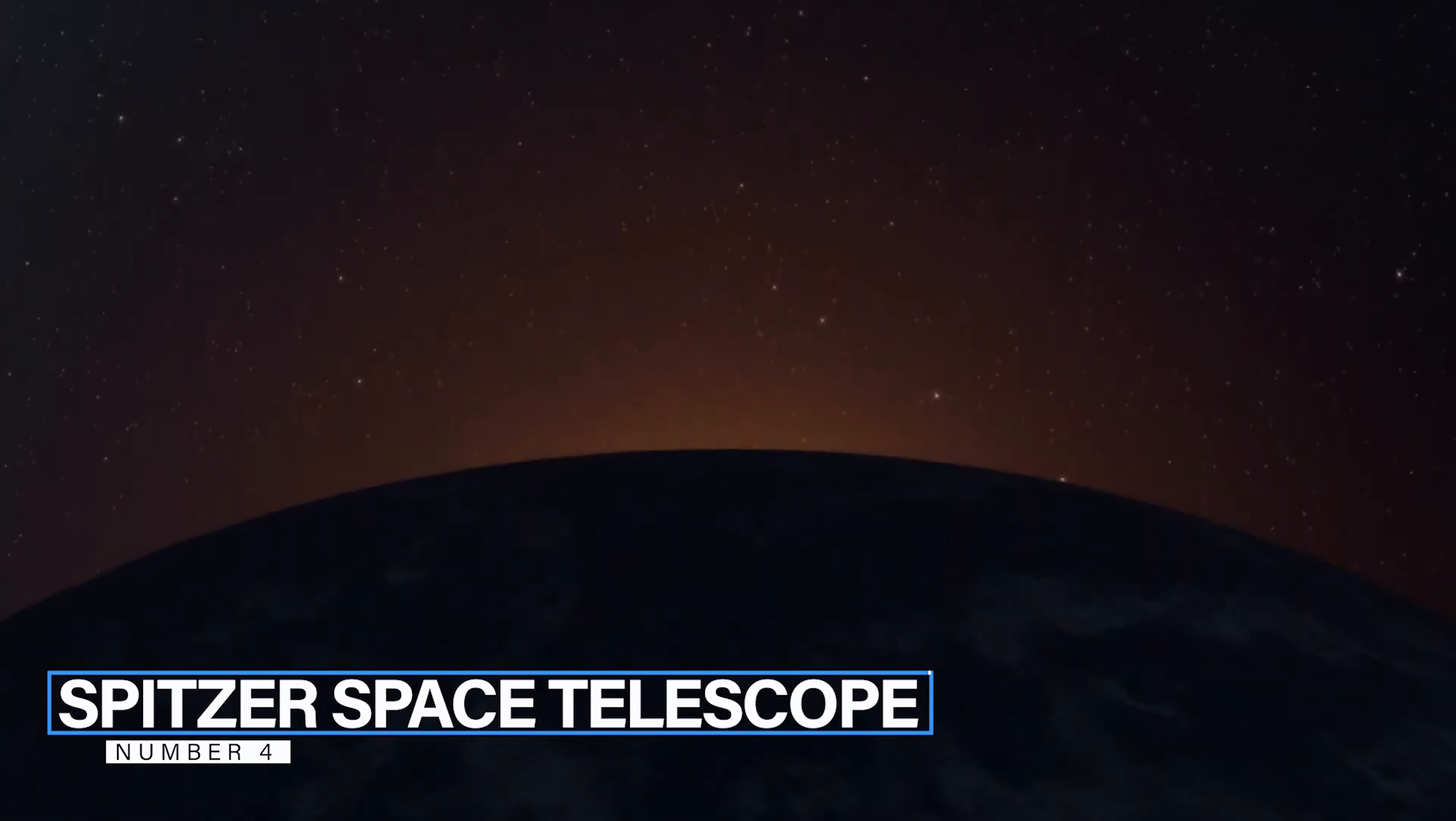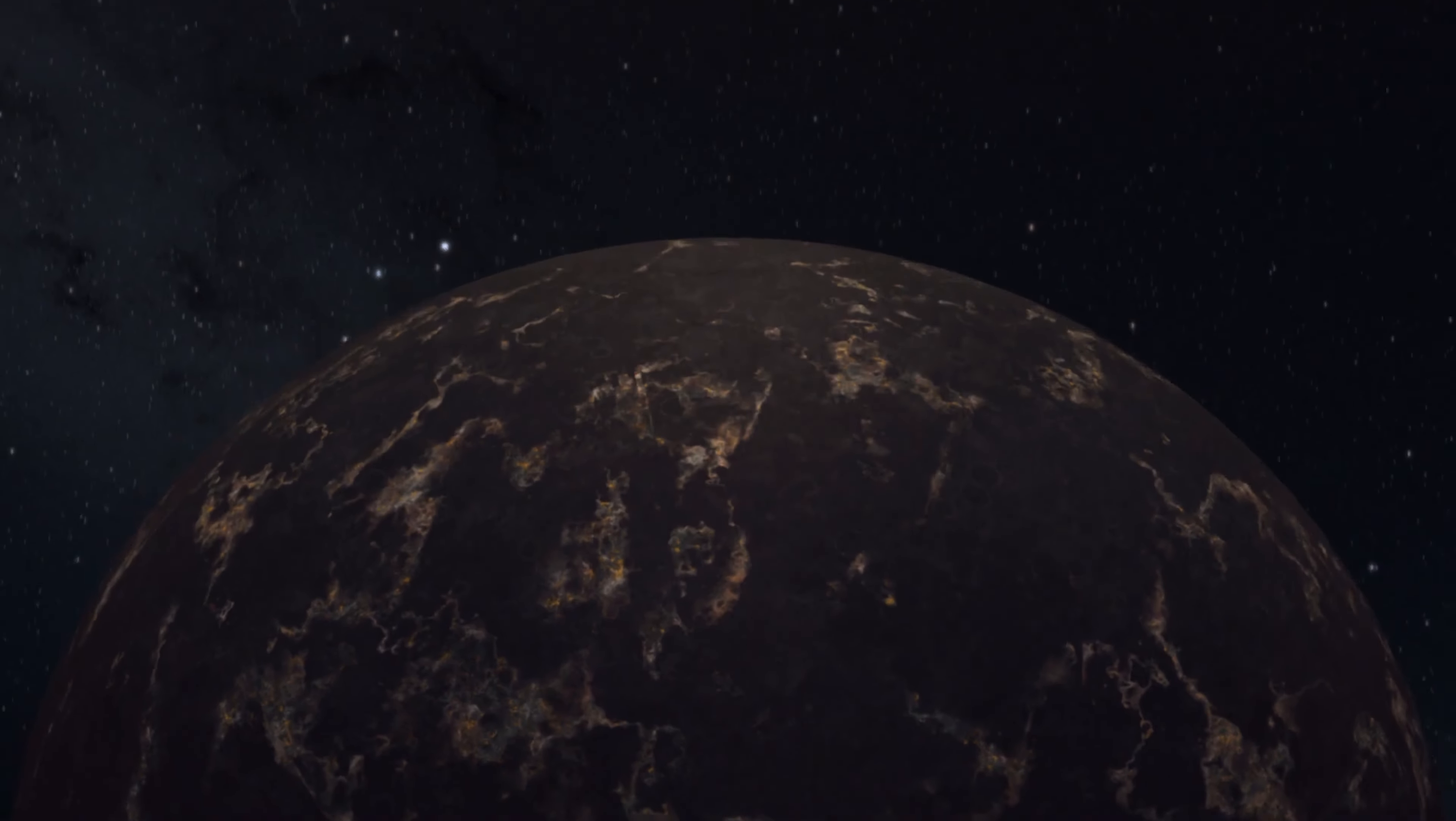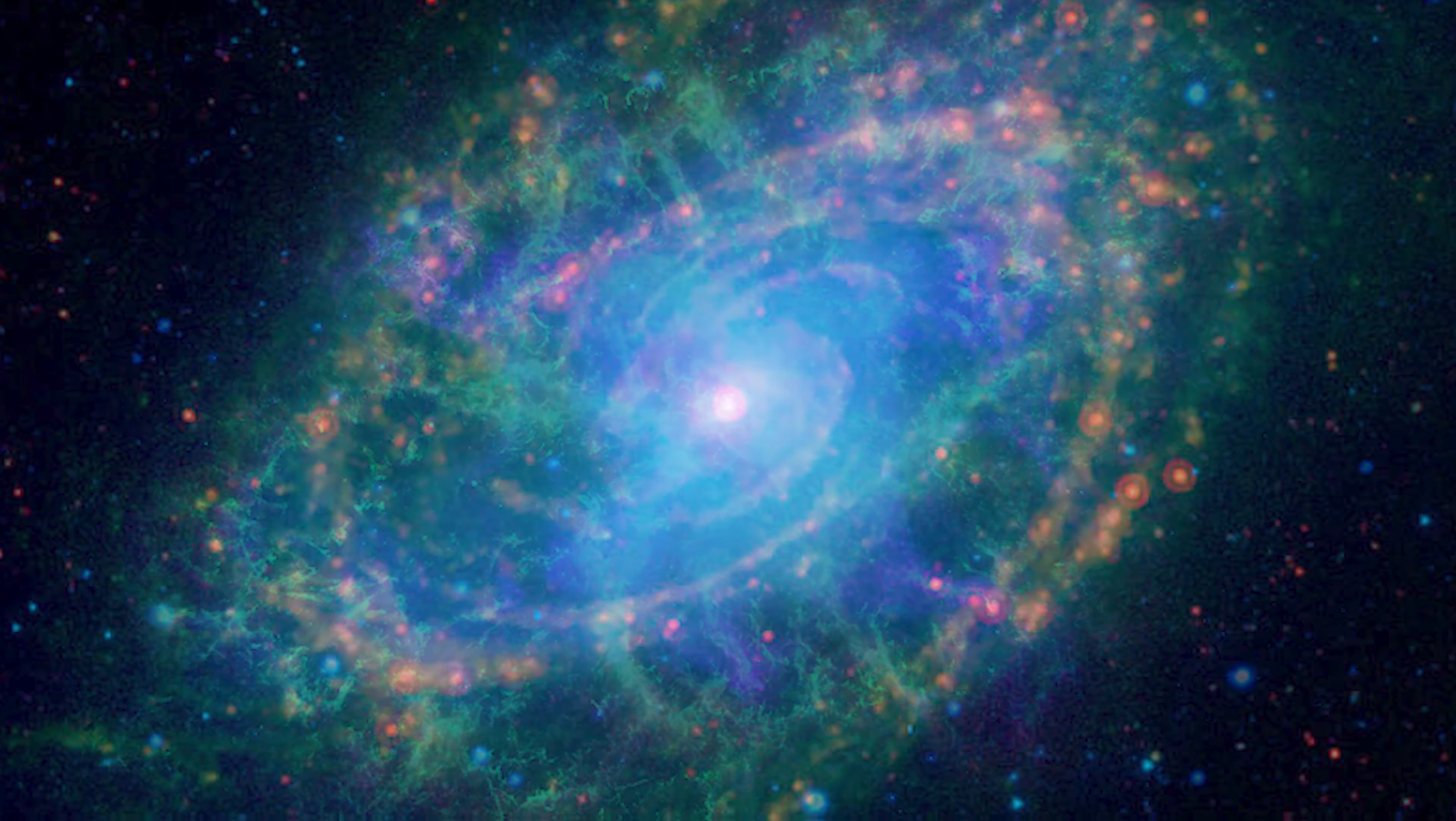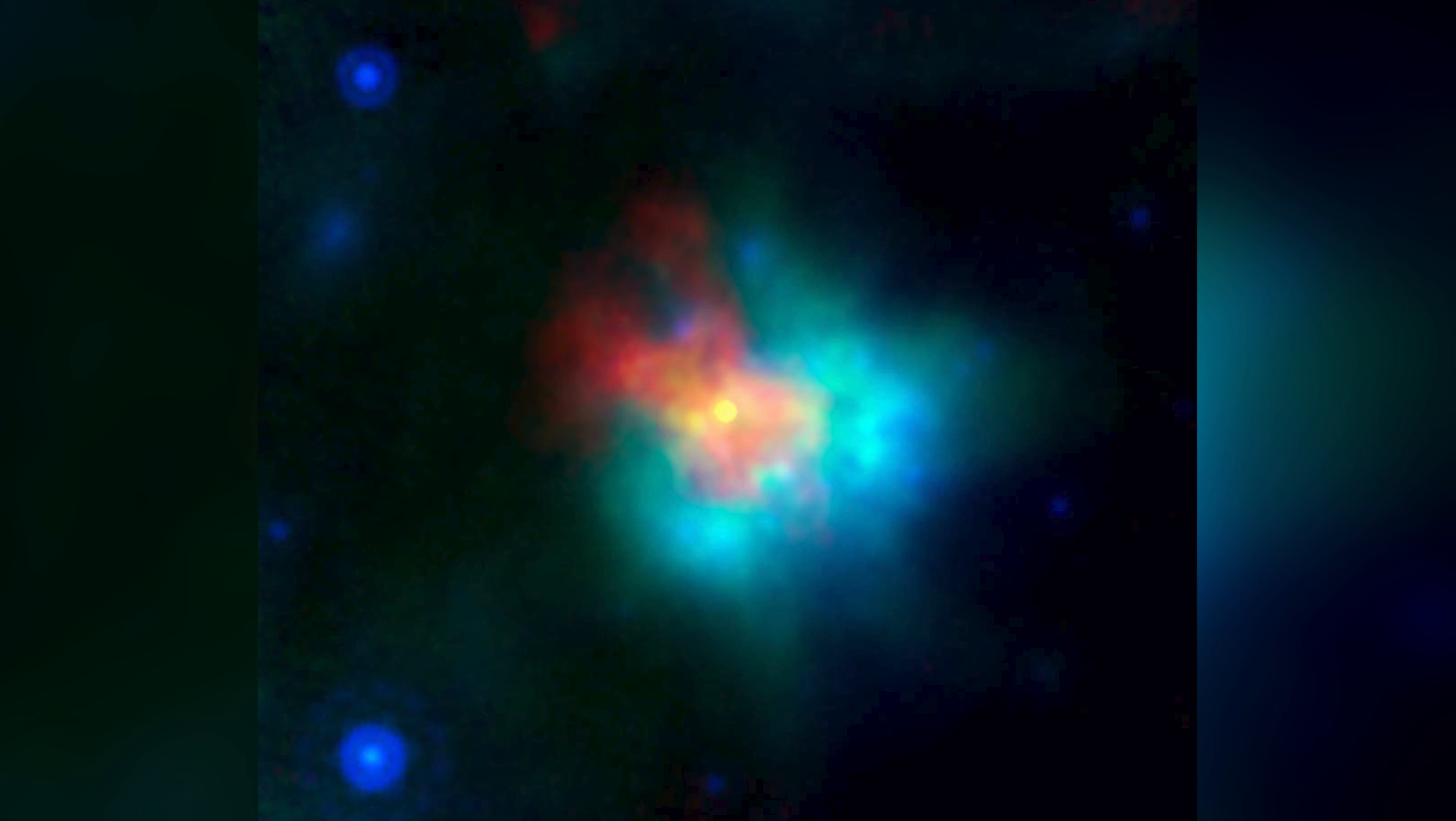At number 4 we have the Spitzer Space Telescope, launched in 2003. The Space Infrared Telescope Facility, SIRTF, which later became the Spitzer Space Telescope, was an infrared space telescope that was launched in 2003. The last day of operations was January 30th of 2020. After IRAS in 1983 and ISO from 1995 to 1998, Spitzer was the third space telescope that was used for infrared astronomy.